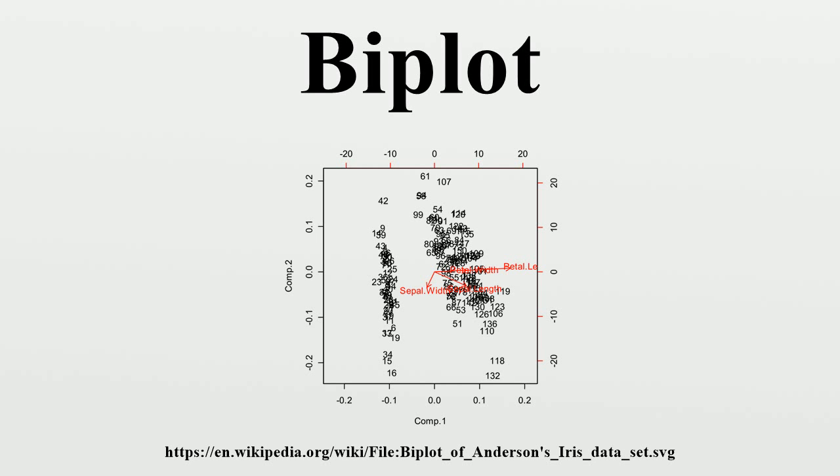Introduction and History: The biplot was introduced by K. Rubin Gabriel. Gower and Hand wrote a monograph on biplots. Yan and Kang described various methods which can be used to visualize and interpret a biplot.